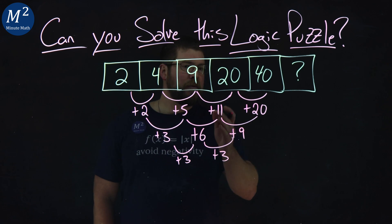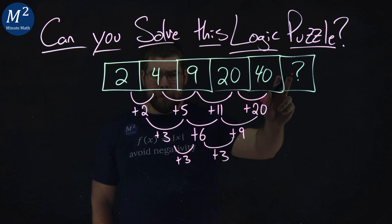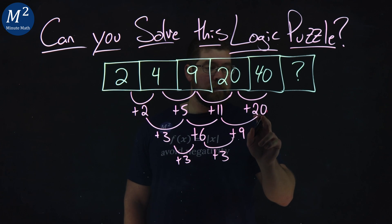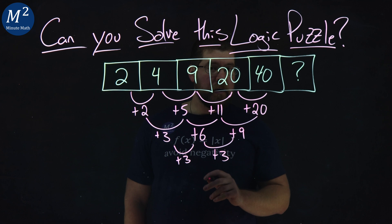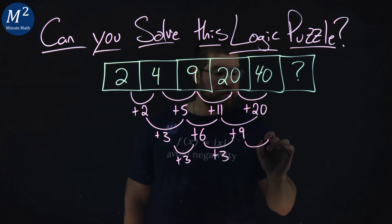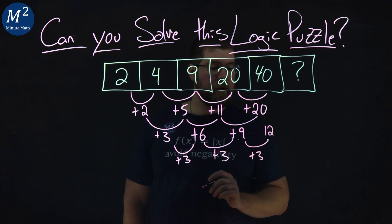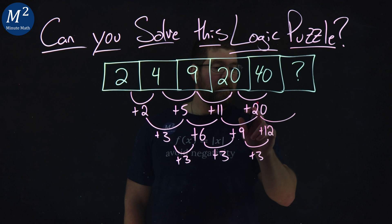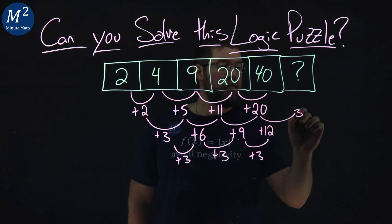So how can we apply this to our final number here? If we have a plus 9 from 11 to 20 here, the next one being a plus 3. 9 plus 3 is 12, right? We have a plus 12. So that means 20 to its next number, we have to add 12 to it. So 20 plus 12 is 32.